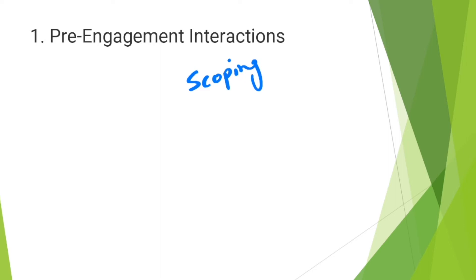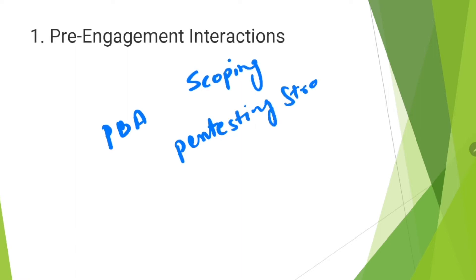During the pre-engagement interaction or scoping phase, the pen tester should work with the enterprise to understand any kind of risk. The pen tester also has to understand the PBA — Pattern of Business Activity — which includes the culture of your organization and what will be the best pen testing strategy.